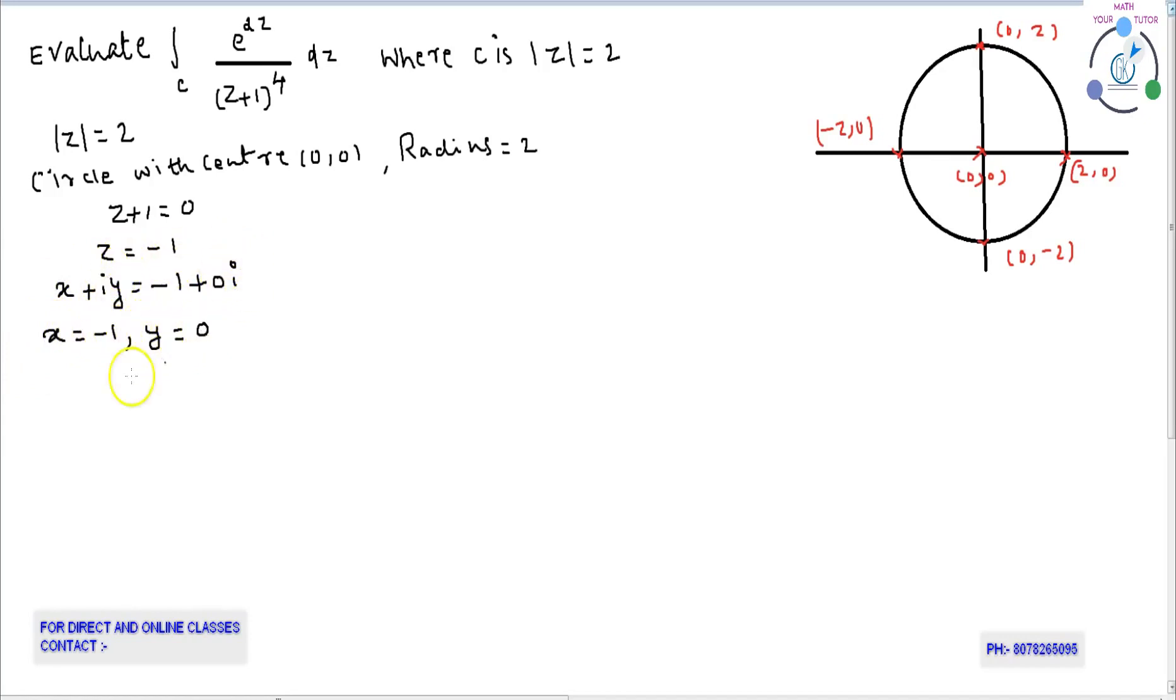Comparing the real part on both sides, we get x equals minus 1. Comparing the imaginary part on both sides, we get y equals 0. That gives the coordinate (minus 1, 0).